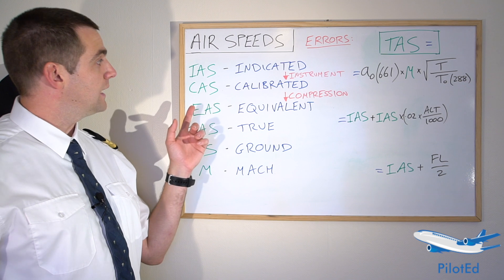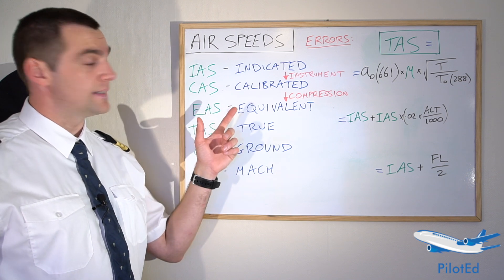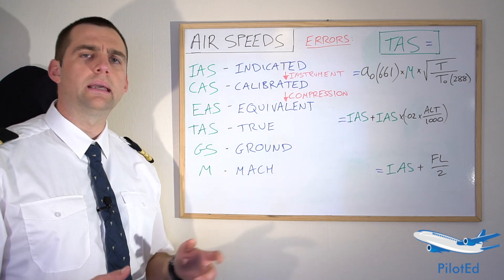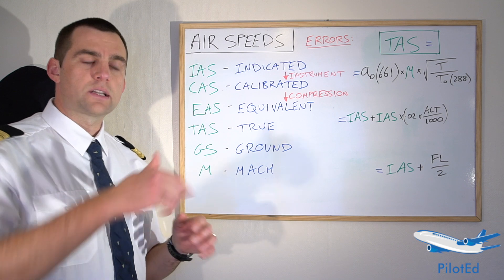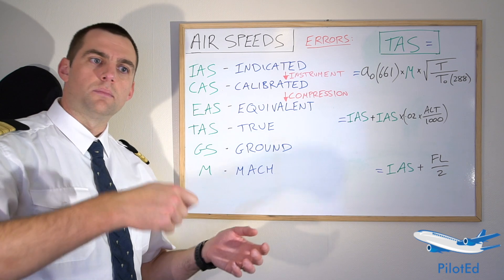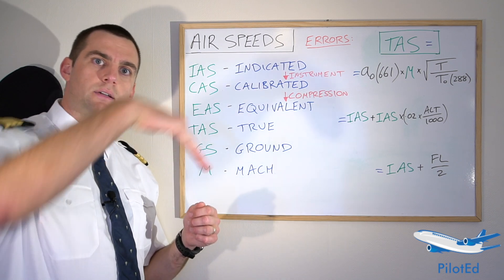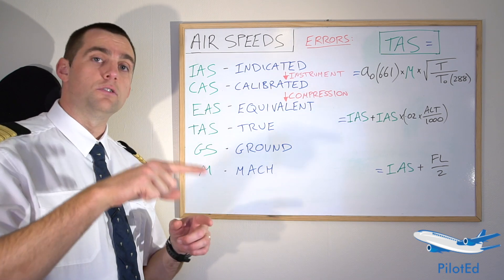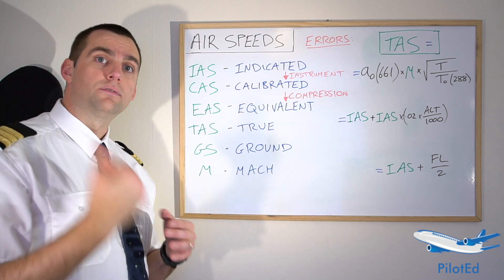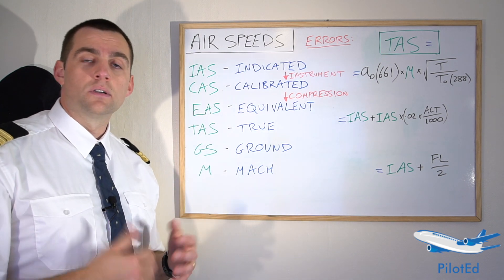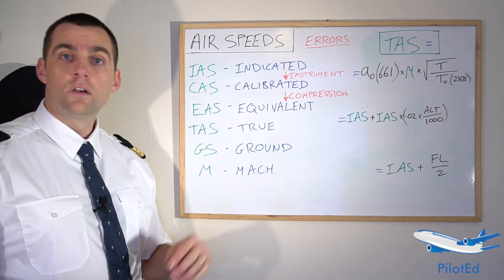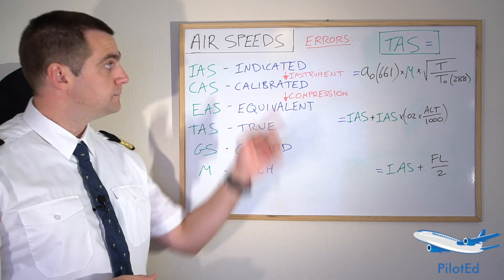Next up, calibrated airspeed. Calibrated airspeed is our indicated airspeed corrected for position and instrument errors. These errors are very small and only really come into play when the flaps are down. If you imagine when you put the flaps down, the centre of lift actually goes backwards and you'll notice in any aircraft the nose tends to pitch down and it bubbles up a little bit. So as you pitch down, that pitot tube, which is fixed on the airframe, is now going to be pointing slightly down and not getting the full flow of air into the pitot. So the indicated airspeed will now be slightly lower than the actual airspeed. That's instrument and position error — our first error.